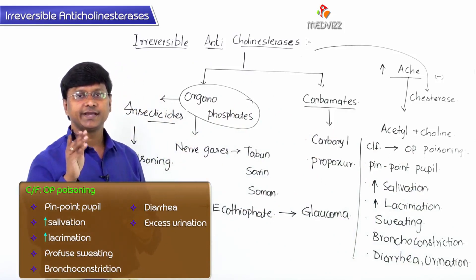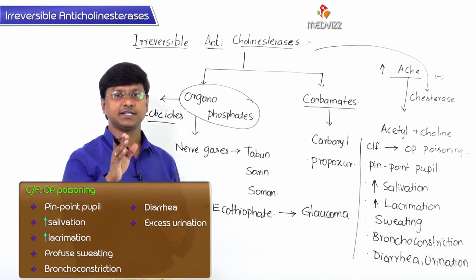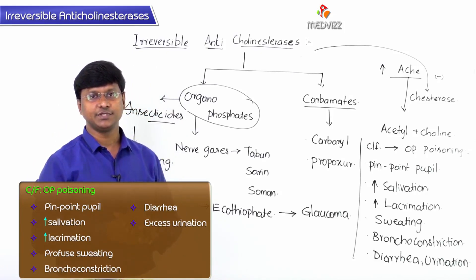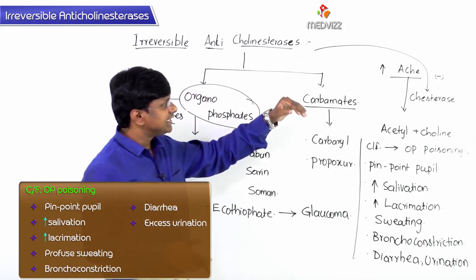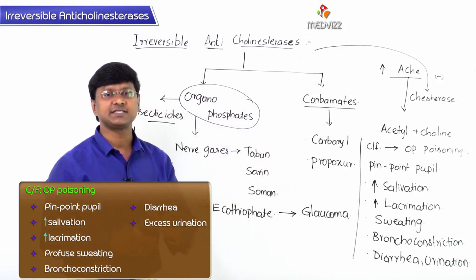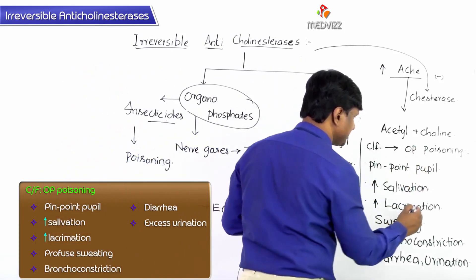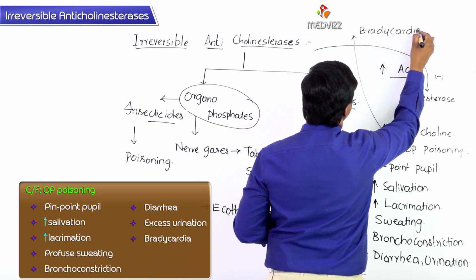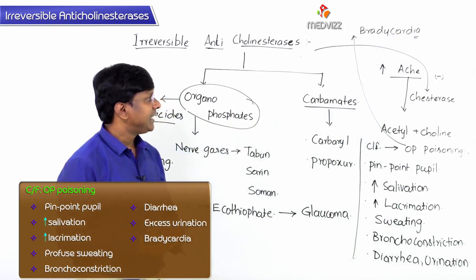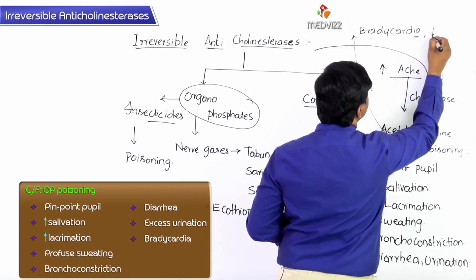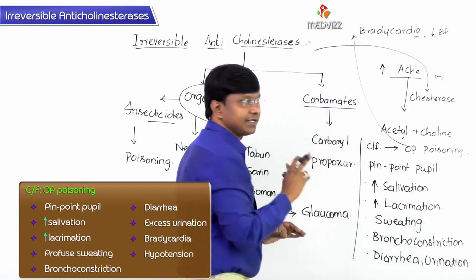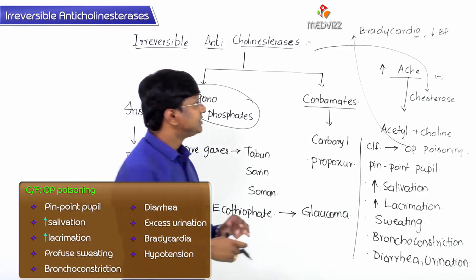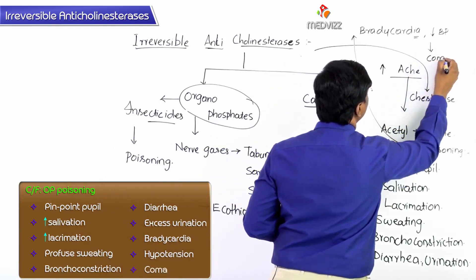Acetylcholine reduces the heart rate, so in organophosphorous poisoning the heart rate is suppressed, leading to bradycardia. Blood pressure also reduces, causing hypotension. Ultimately, because of hypotension, cerebral perfusion is reduced, and these individuals will land up in coma.